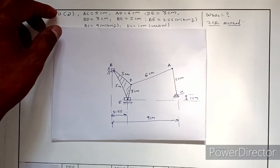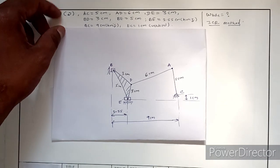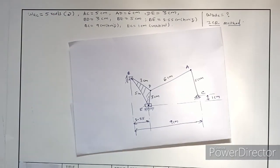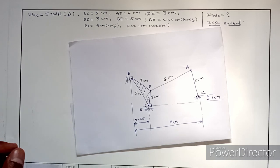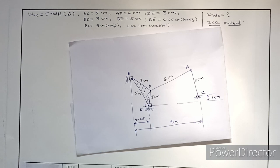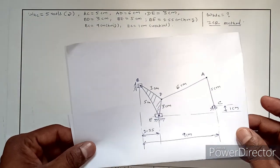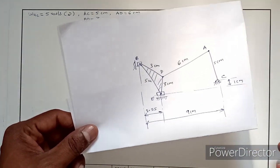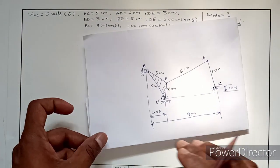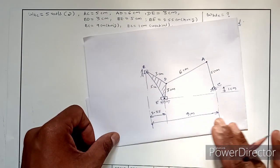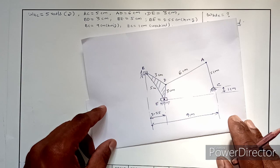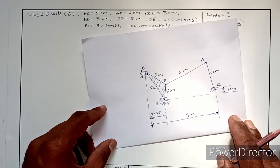Hello everyone, you are listening to Professor Dhananjaya Bhoge. Welcome to the lecture series on kinematic analysis of mechanisms using graphical methods. Under this, we are studying the instantaneous center of rotation method to determine angular velocities of various links in a planar mechanism. In the last lecture we solved one simple numerical on a single-sided crank chain.